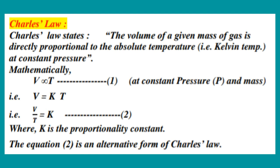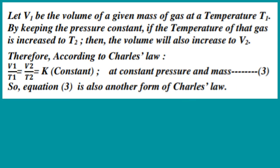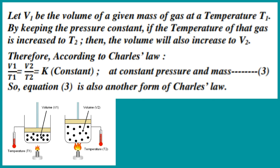This equation 2 is an alternative form of Charles's Law. The alternative form V by T equal to K can be further explained as: let V1 be the volume of a given mass of gas at temperature T1. By keeping the pressure constant, if the temperature of that gas is increased to T2, then the volume will also increase to V2. Therefore, according to Charles's Law, V1 by T1 equal to V2 by T2 equal to K, meaning constant. This is at constant pressure and mass. This equation becomes equation number 3.